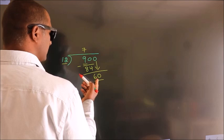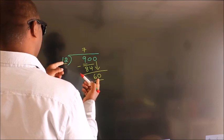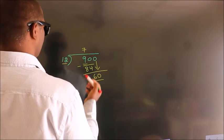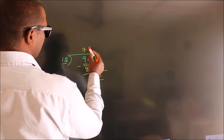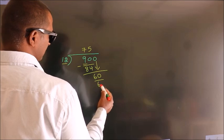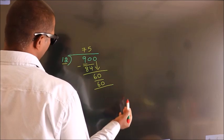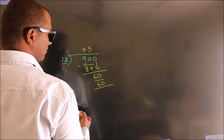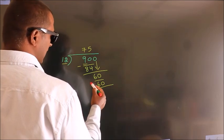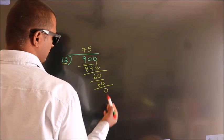When do we get 60 in the 12 times table? 12 fives is 60. Now we subtract and we get 0.